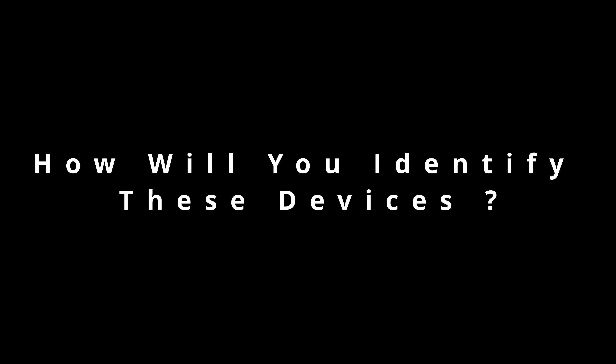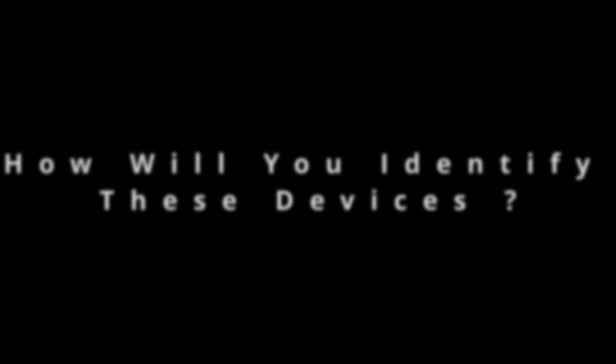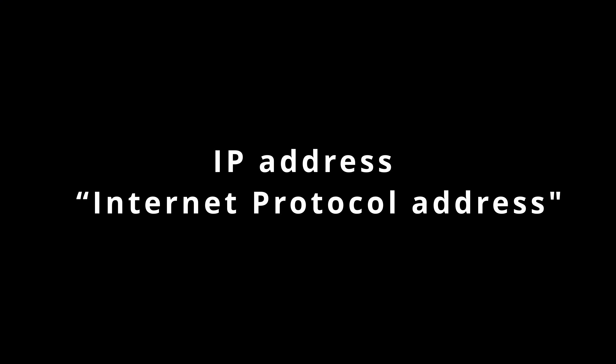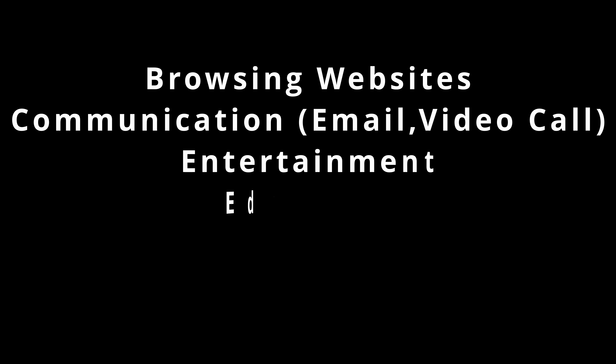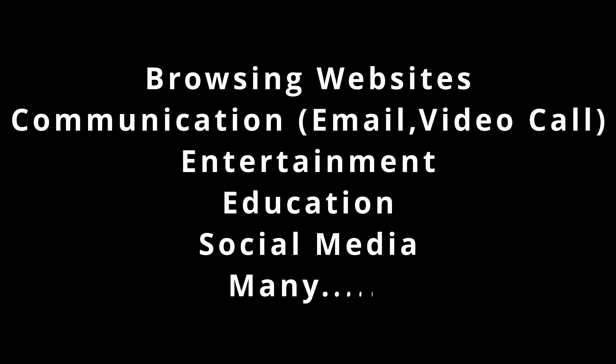You may wonder how devices are identified in such a large network. Each device is assigned a unique address called an IP address that helps identify and communicate with other devices. In our daily life we use the internet for browsing websites, communication like email and video calls, entertainment, education, and social media.